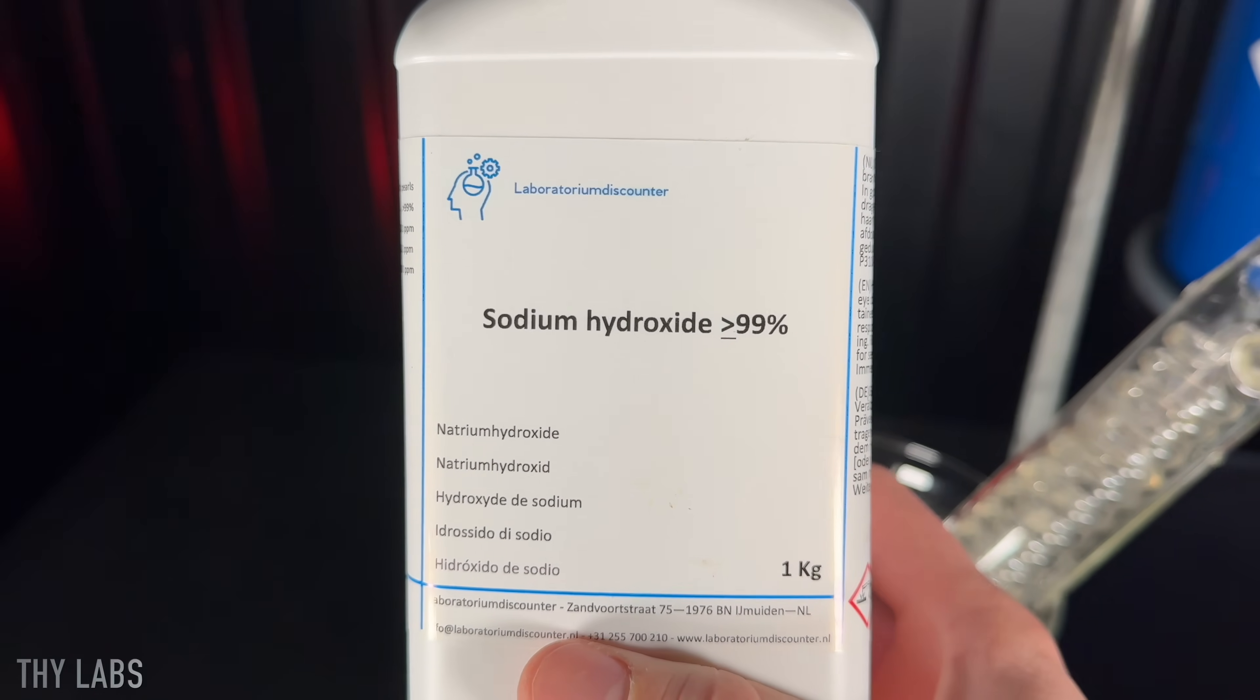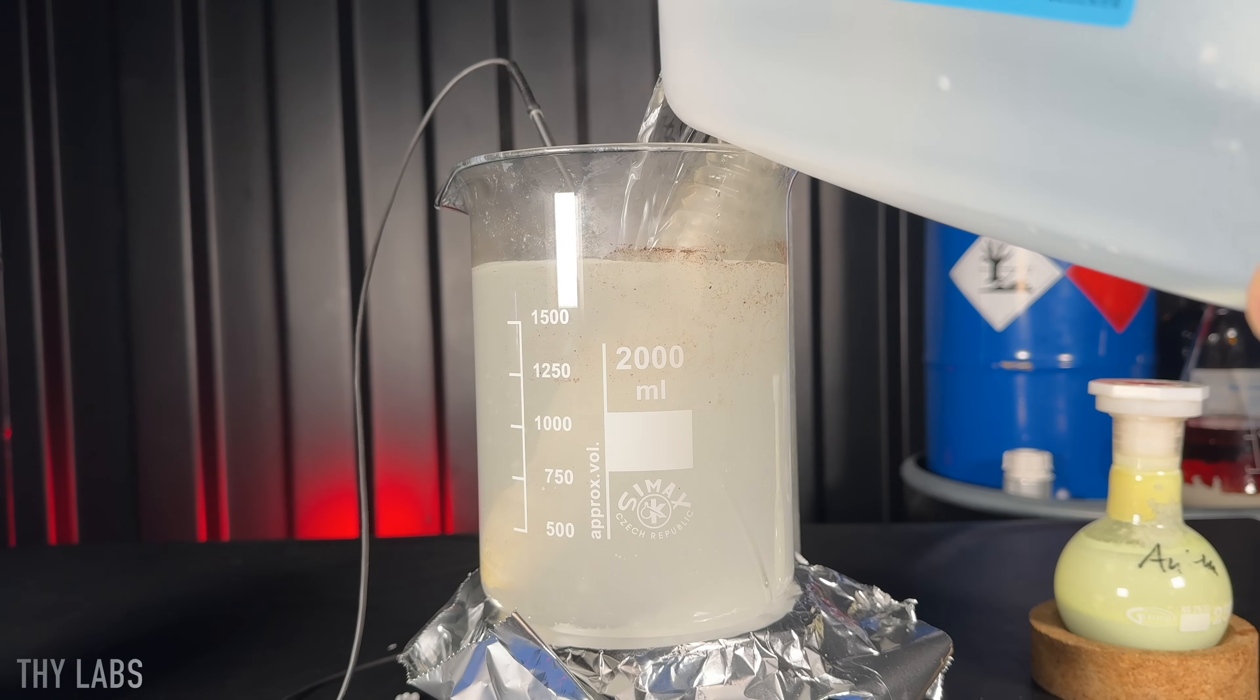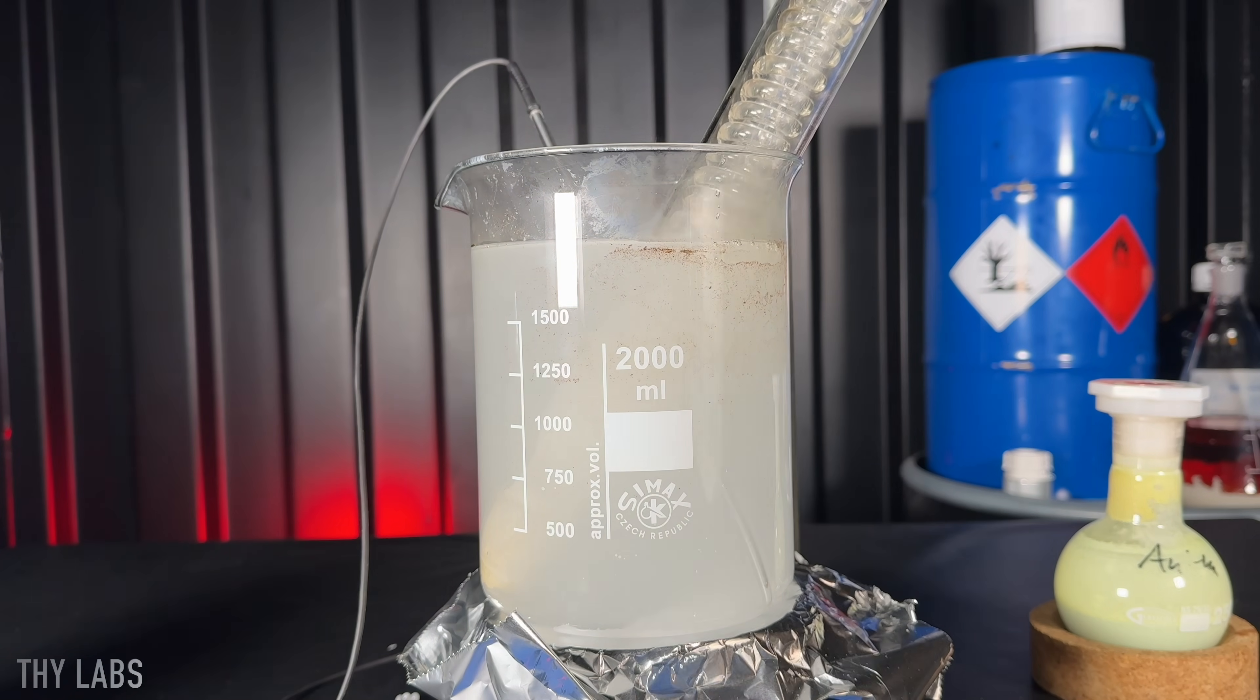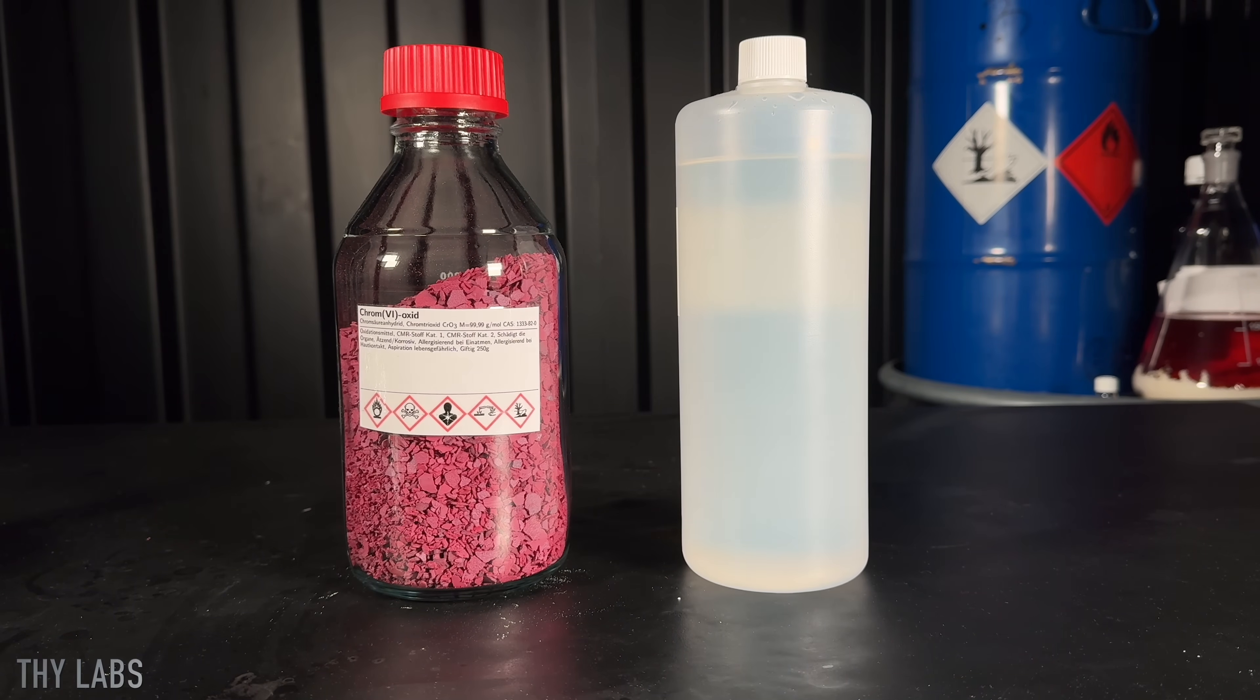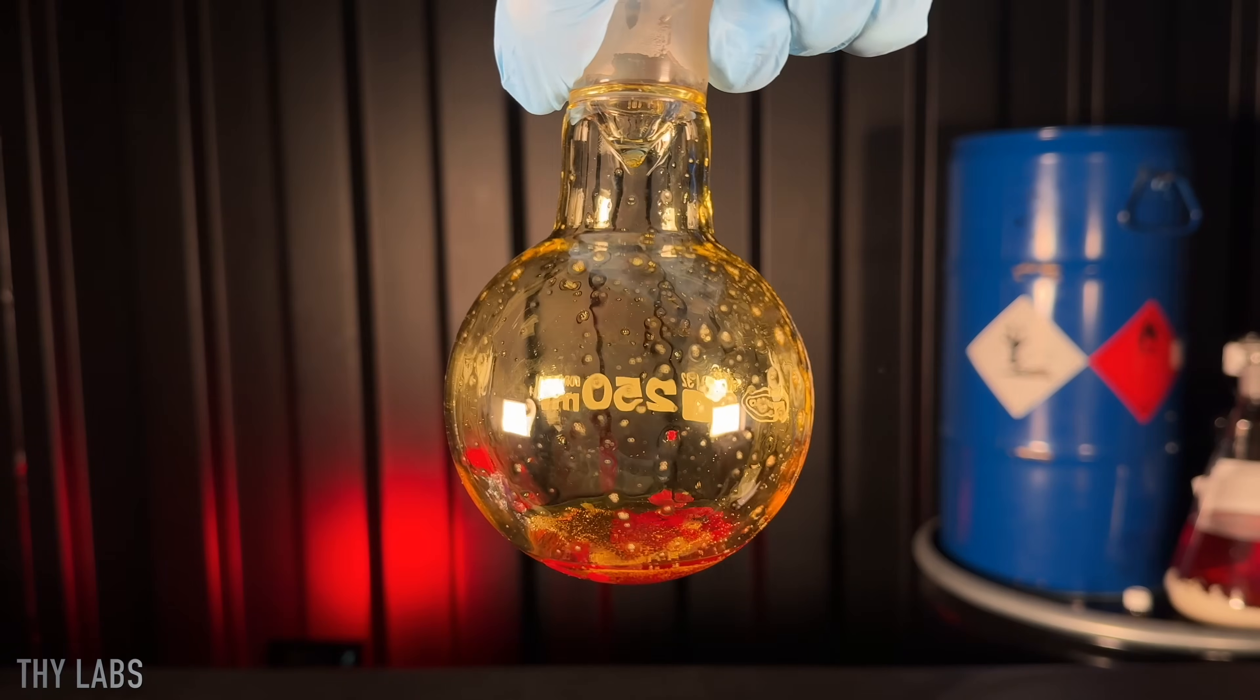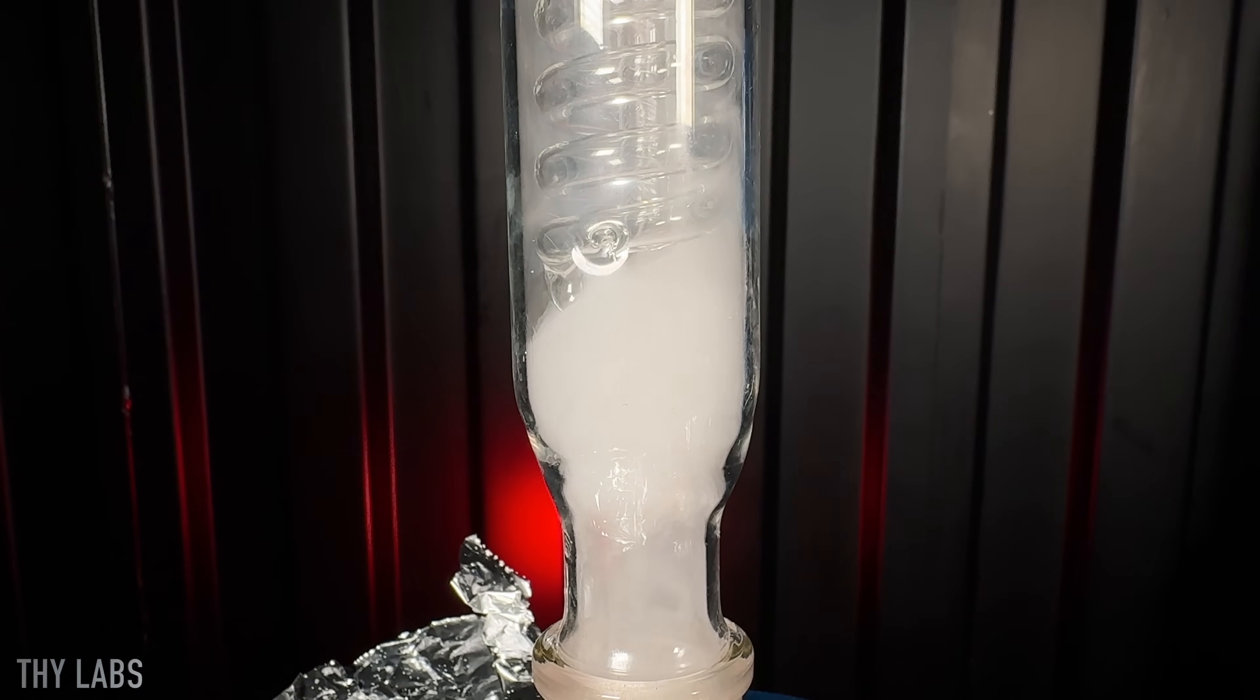There was some insoluble residue in the condenser and in the flask. I tried to get rid of it with many methods. I tried to clean it using acetone, using boiling hot sodium hydroxide solution, using a mixture of chromium trioxide and sulfuric acid. I even tried boiling hot piranha solution and refluxing concentrated sulfuric acid.